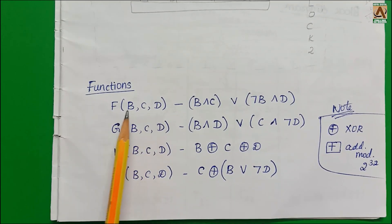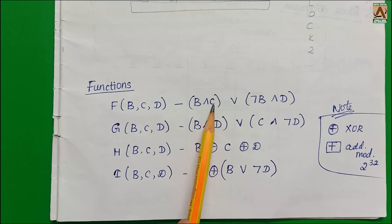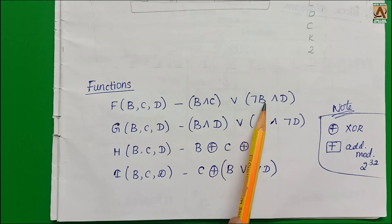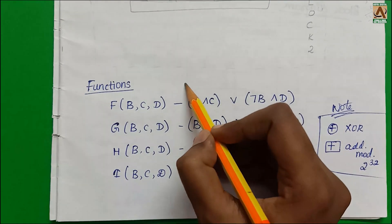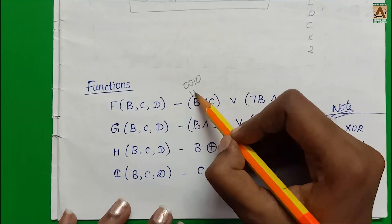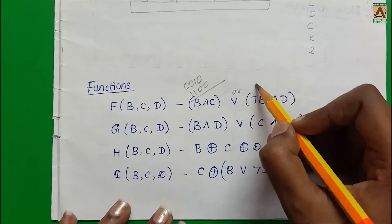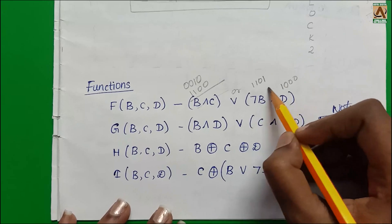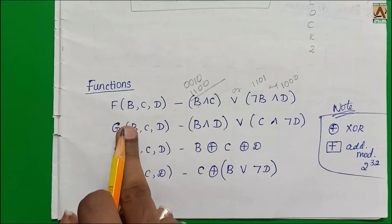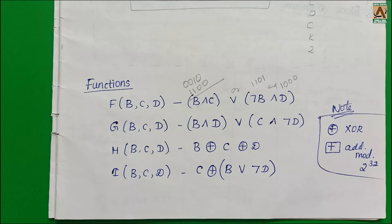Function F(B, C, D) equals (B AND C) OR (NOT B AND D). For example, if B value is 0010, C value is 1100, apply AND operator then OR operator with NOT B AND D. Functions G, H, I have similar operations - these are static functions in the algorithm design.